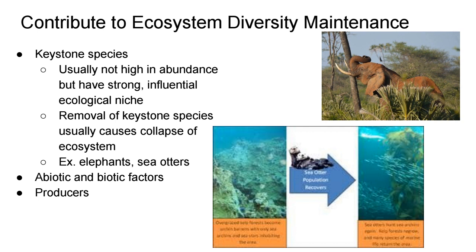Let's look at things that help maintain diversity in the ecosystem. First is what's called a keystone species. A keystone species is usually not high in abundance — there are fewer of them in number — but they have a very strong influential role within the ecosystem. Their niche is crucial, and if this organism is removed, even though there's a small number of them, it can make the entire ecosystem collapse.